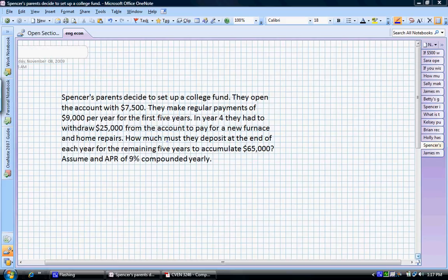Let's read the problem. Spencer's parents decided to set up a college fund. We've kind of already seen this problem, but it's a little bit more difficult this time. They open the account with $7,500, and then they're going to make regular payments of $9,000 per year for the first five years.